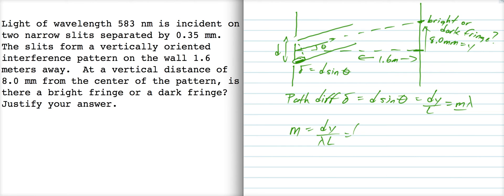Now the distance between the slits is given to be 0.35 millimeters. The y-coordinate there in the pattern is 8 millimeters. The wavelength of light that we're using is 583 nanometers, and the length is 1.6 meters. So if I solve for M, I get M is equal to three.